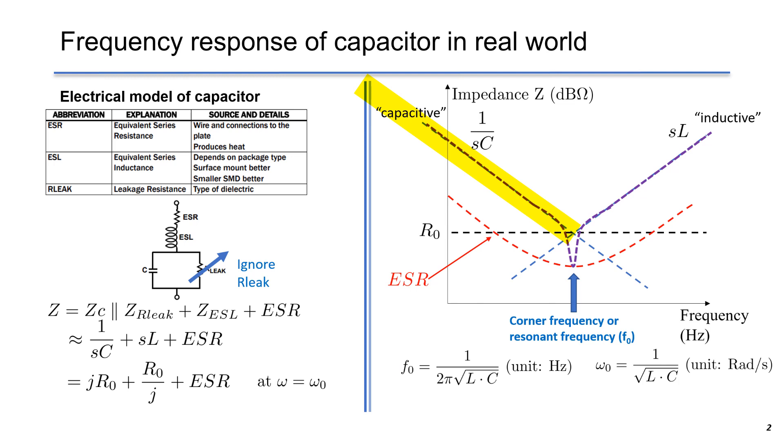That means it is working as a good capacitor with some ESR. However, when the frequency is higher than F0, the ESL will dominate in the impedance graph and the capacitor becomes inductive. At F0, L and C cancel out each other on the impedance. We only have ESR left.